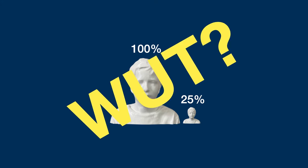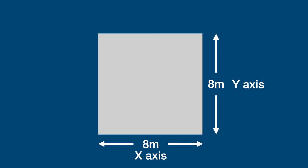That's not intuitive at all. I can see that you're skeptical. Well, I can prove it. So here's a square — it's two-dimensional for now, but it's 8 meters on the y-axis and 8 meters on the x-axis.